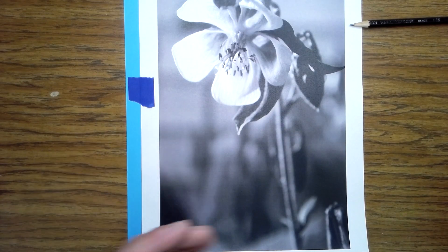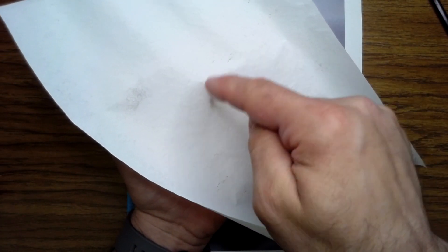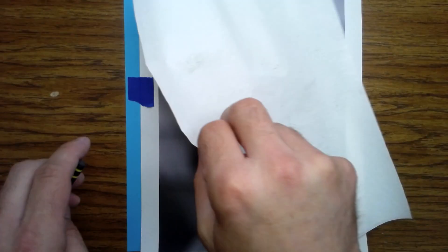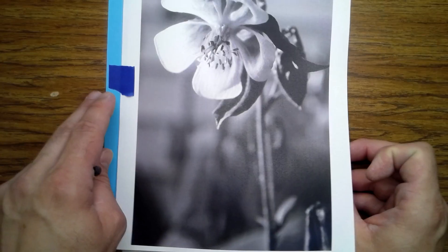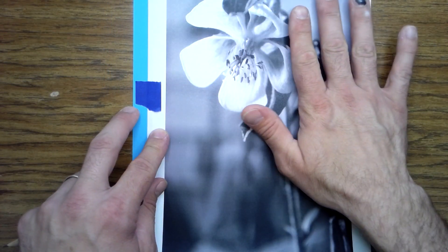I'm going to take my seral paper - this is the side that has the powder on it. I'm going to put that side down. I'm going to lift this up, slide that under nice and flat.